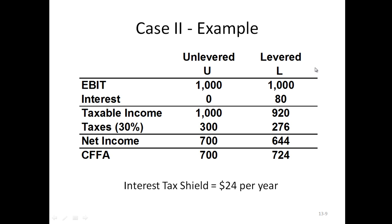Now let's look at the levered firm. Same $1,000 in EBIT, $80 in interest, which means that we have $920 in taxable income. We have $276 in taxes — 30% of $920 — which gives us $644 in net income.